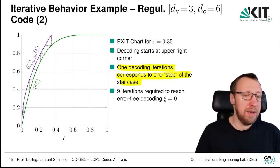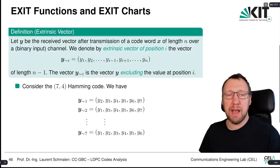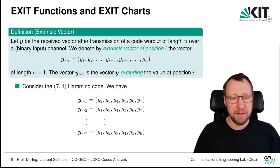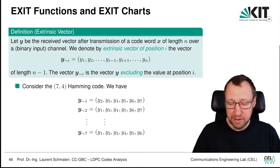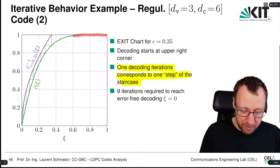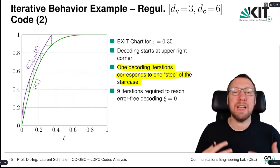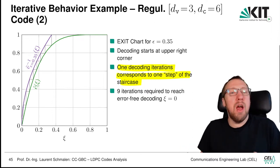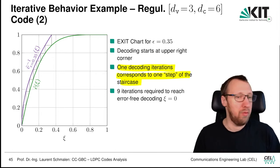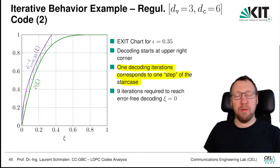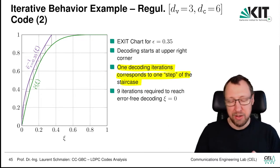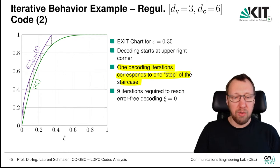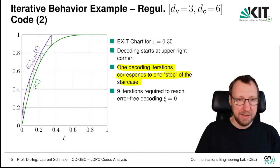This is essentially the EXIT chart. The EXIT chart can be formalized a little bit, and we introduce it formally because what we did here can later be extended to channels beyond the binary erasure channel. For other channels, we don't have an erasure probability; we need another measure — the mutual information from information theory.